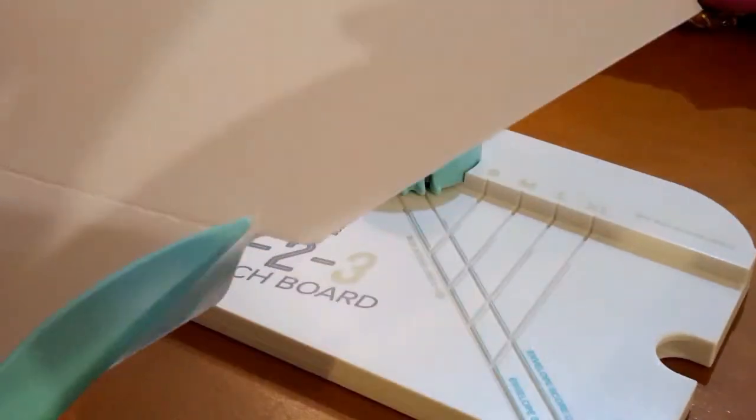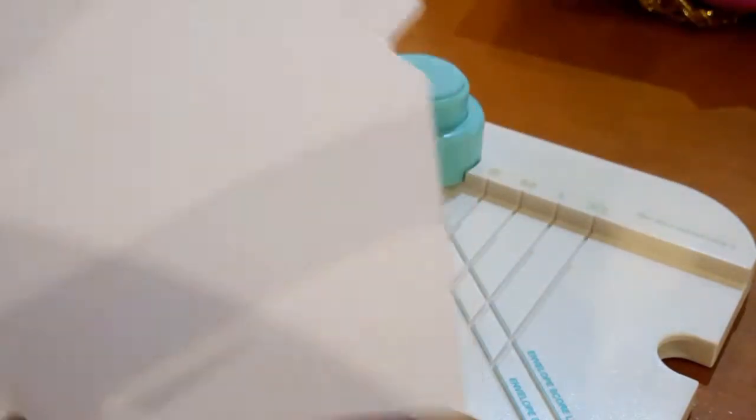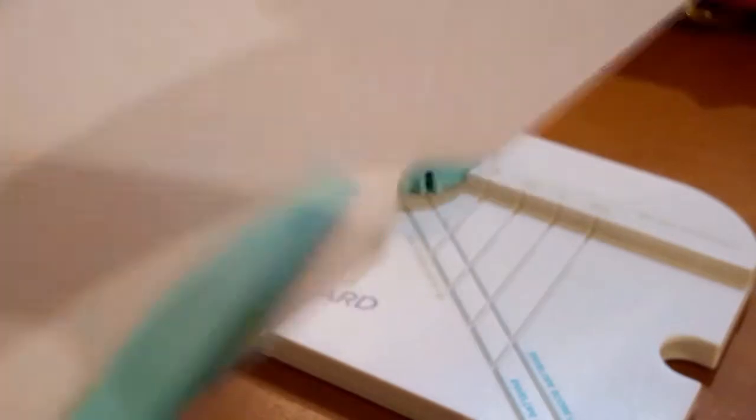So these are the 4 notches that you would see after you punched it using the 123 punch board. I love this little gadget, it's very handy and it makes envelope making pretty easy. So I'm just going to move that out of the way.